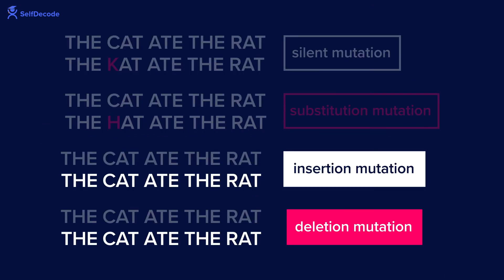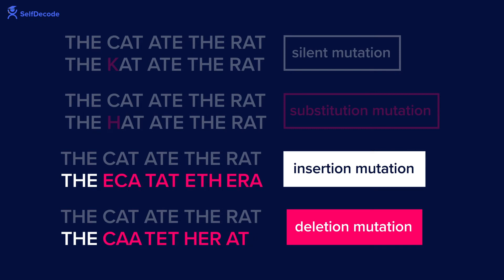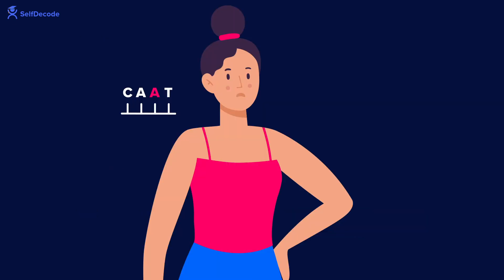Some genetic mutations can be even more disruptive. Imagine if a typo added a letter to a sentence or removed one — these are called insertion and deletion mutations. A person with these types of changes might end up with a very serious hereditary disease.